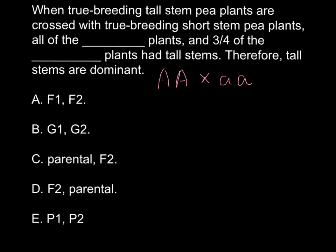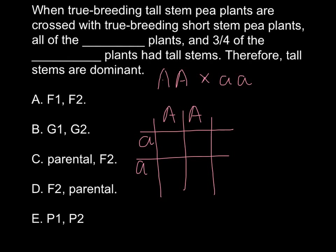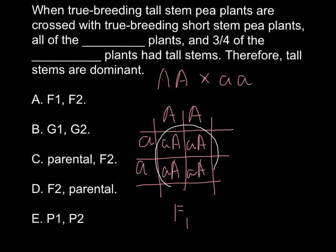In our F1 generation, we have to build a Punnett square using these two parents. We are going to get small a capital A in each box — small a capital A here, small a capital A here, small a capital A here, and small a capital A here. So this F1 generation is going to be genetically different from both parents, but all of these plants are going to look exactly like the dominant parent phenotypically.